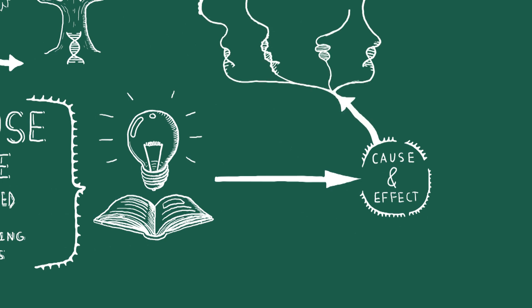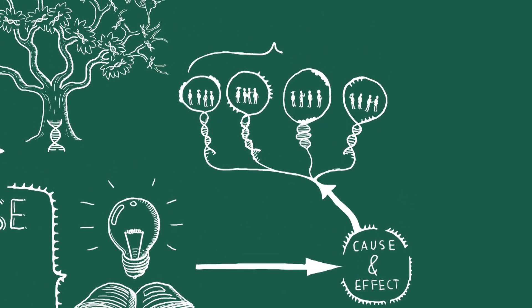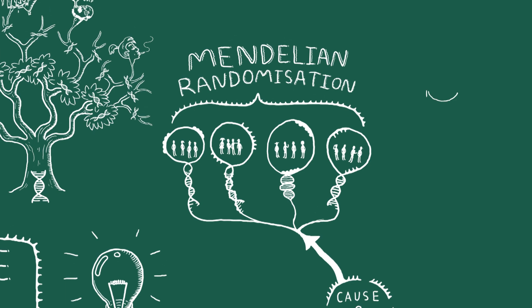We can use this knowledge to learn about cause and effect, grouping people according to their genetic code. This method is called Mendelian randomisation.